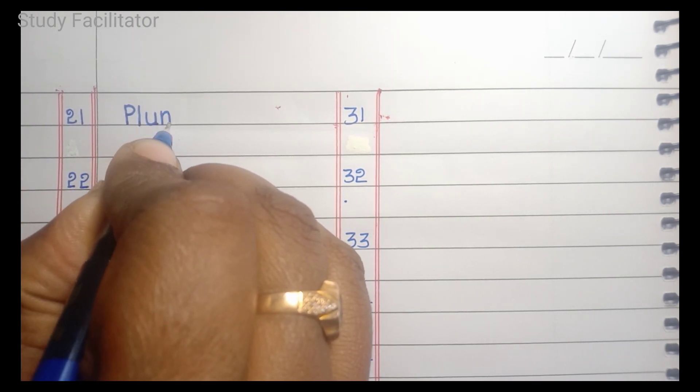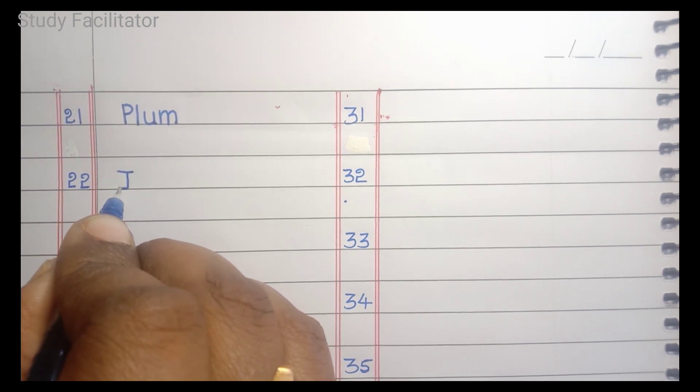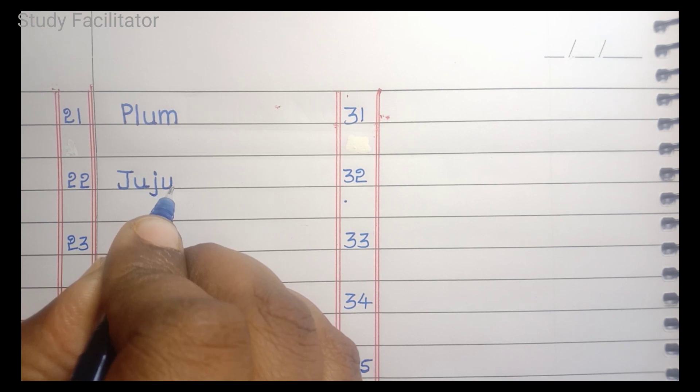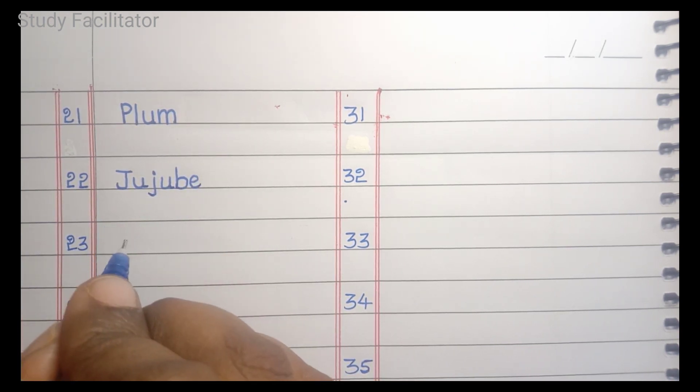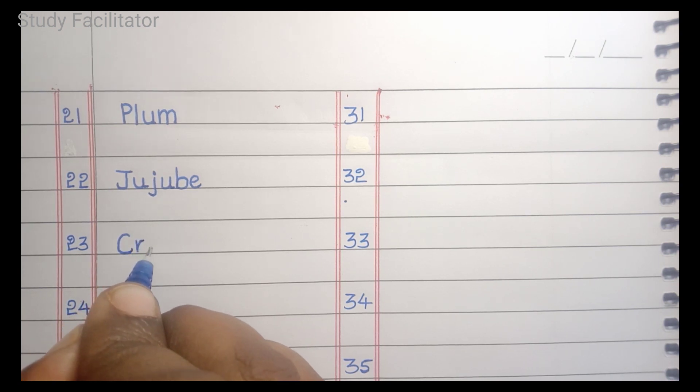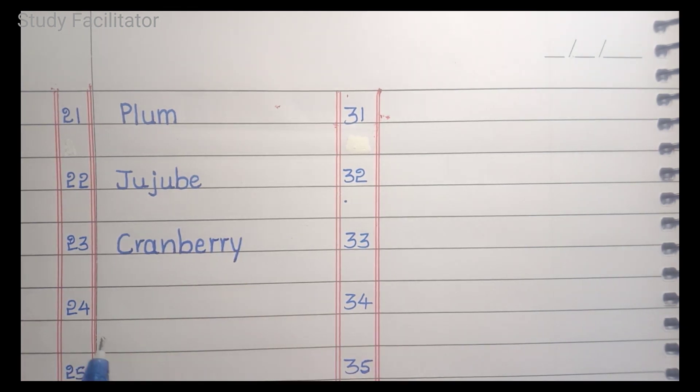Plum. P, L, U, M. Plum. Jujube. J, U, J, U, B, E. Jujube. Cranberry. C, R, A, N, B, E, R, R, Y. Cranberry.